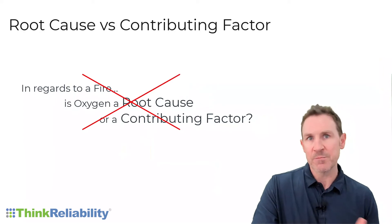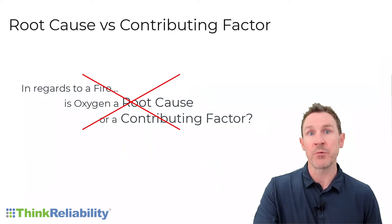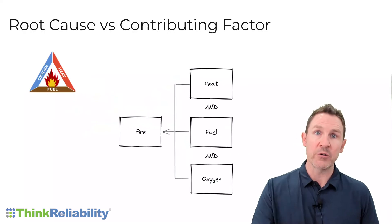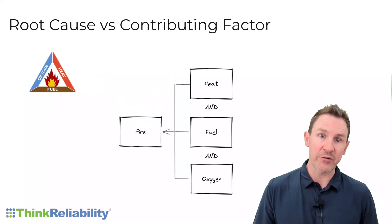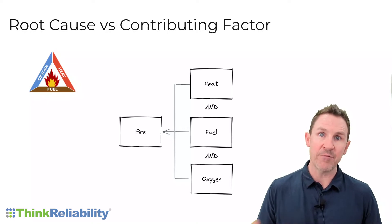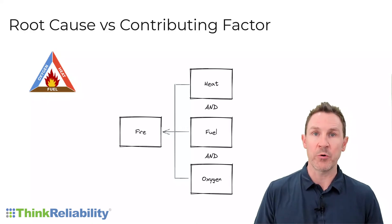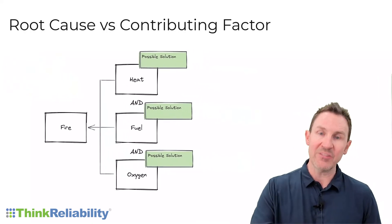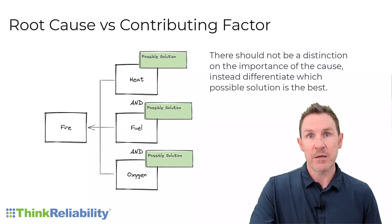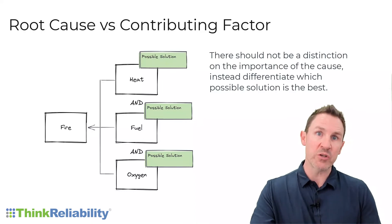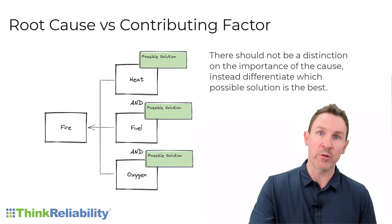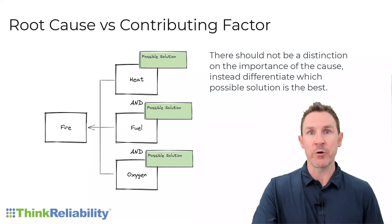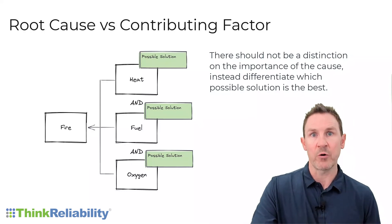This is why this becomes a challenge in terms of problem communication. Instead of trying to differentiate the causes, the fire triangle tells us that all three causes — heat, fuel, and oxygen — are required to produce the fire. What happens though is we try to differentiate the causes instead of the solutions. If we debated which solution is best at reducing the risk, then isn't that ultimately the output we want to drive — the best solutions to prevent recurrence.